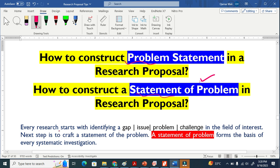Every research starts with identifying gap. This is also called issue, problem, or challenge. All these four words are basically the same. Once you identify the gap, then you basically craft a statement about that problem. You basically write a statement about that problem. This is why it is called problem statement.